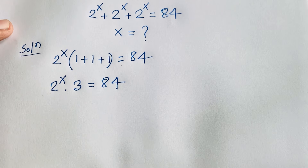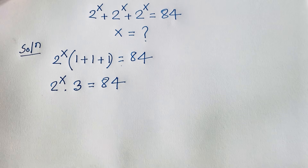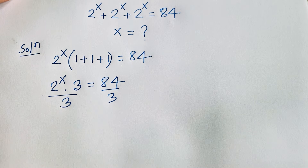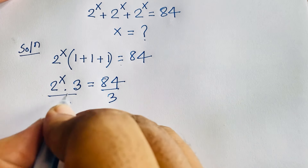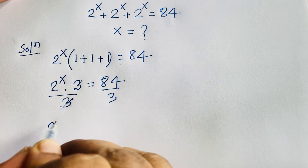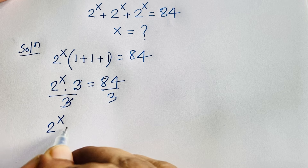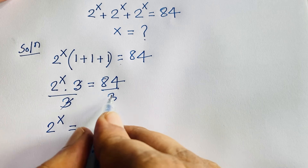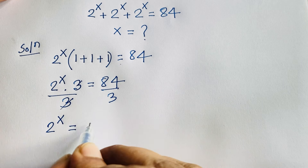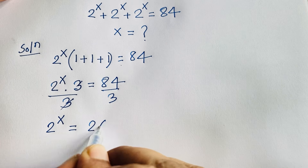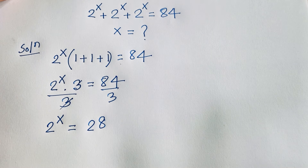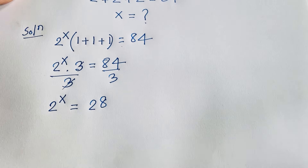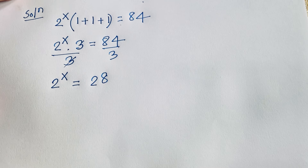Now, dividing both sides by 3 — the 3 cancels — we find 2 to the power x is equal to 84 divided by 3, which is 28. Now we need to find the value of x in this exponential equation.